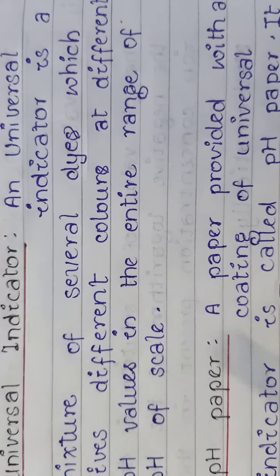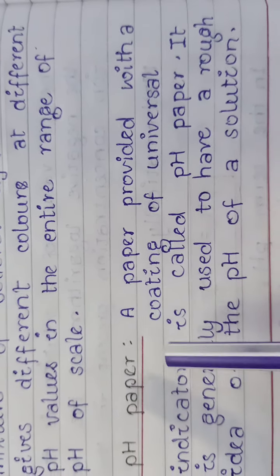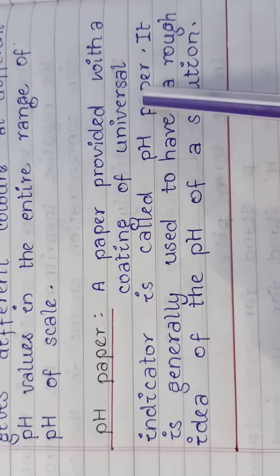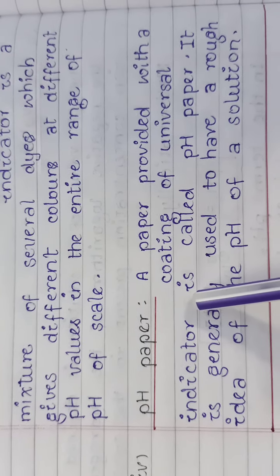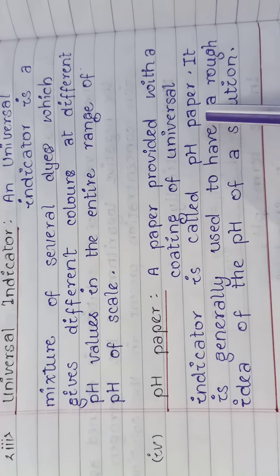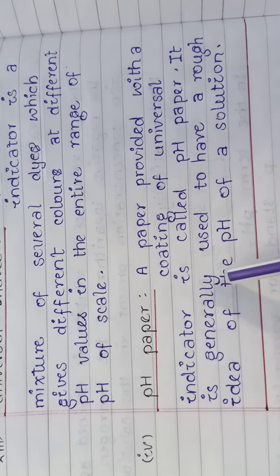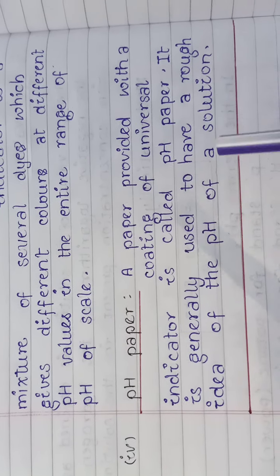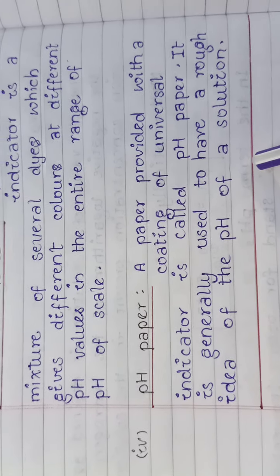When an acid or base is treated with a universal indicator, a specific color corresponding to a particular pH value is obtained. A paper provided with a coating of universal indicator is called pH paper. It is generally used to give a rough idea of the pH value of a solution.